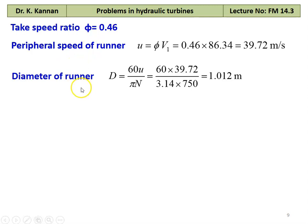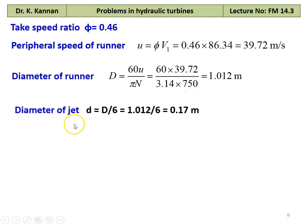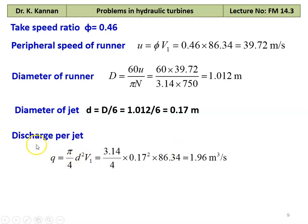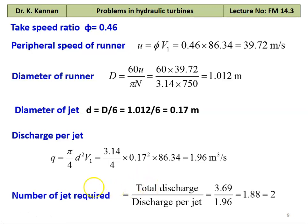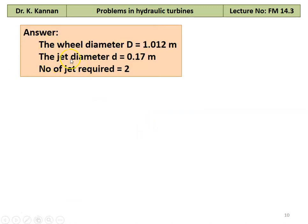Runner diameter D = 60U / (π × N) = 60 × 39.72 / (3.14 × 750) = 1.012 m. Jet diameter d = D/6 = 1.012 / 6 = 0.17 m. Discharge per jet is calculated, and number of jets = 3.67 / 1.96 ≈ 2 jets required. Answer: D = 1.012 m, d = 0.17 m, number of jets = 2.